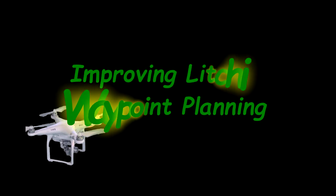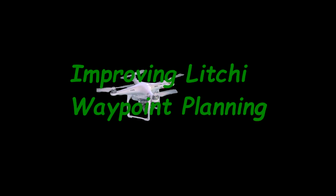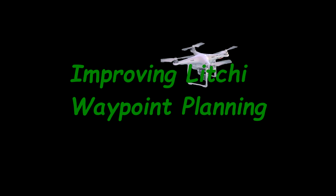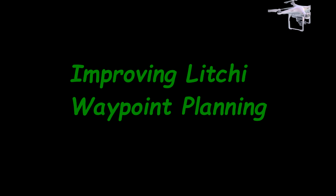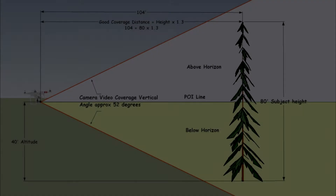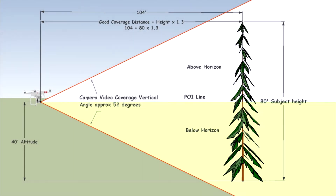I've had several questions about reducing the amount of sky visible in videos shot from the Phantom 3, so I decided to incorporate that into a larger discussion of improving waypoint planning with Litchi software. This video refines the planning process by considering POI and aircraft position and altitude in addition to the field of view of the Phantom camera. While I use the Phantom 3, the concepts are applicable to shooting from any of the drones which have cameras with adjustable gimbal angles.